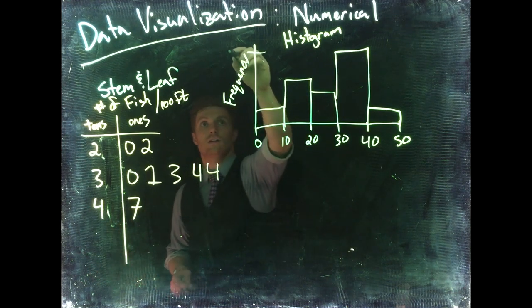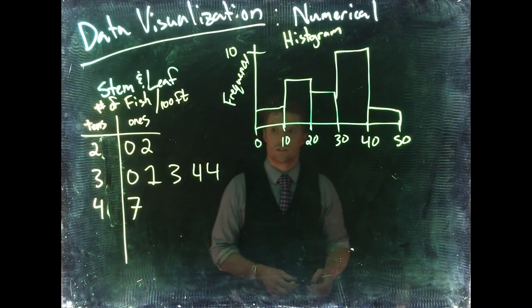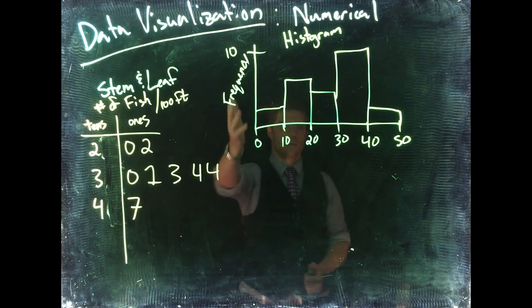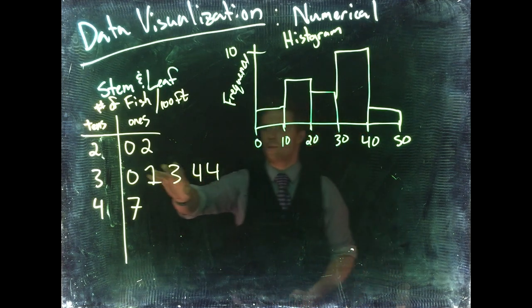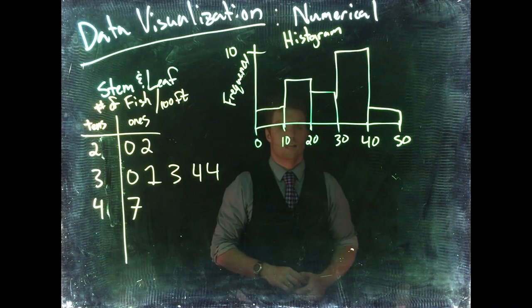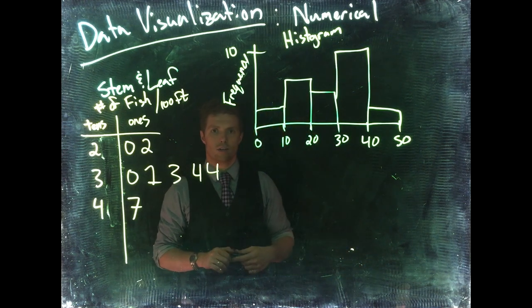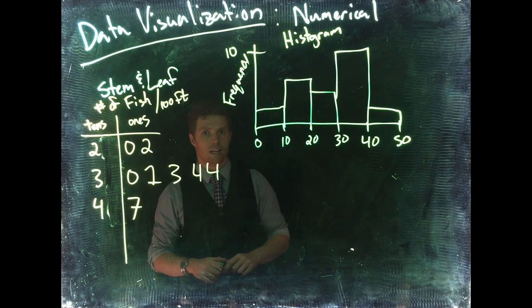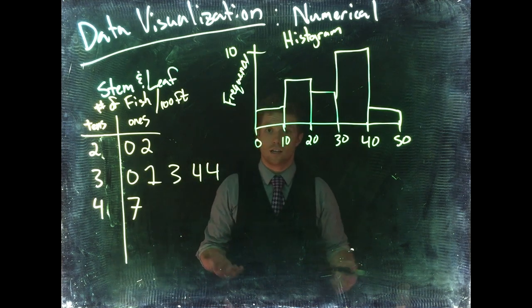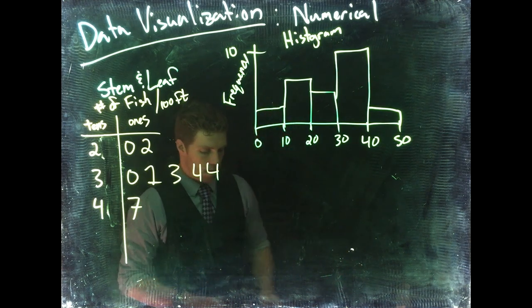This is much more easily scalable and produces very much the same information as the stem and leaf. Histograms are very easy to do when we have our data within a dataset that some sort of statistical package could analyze.